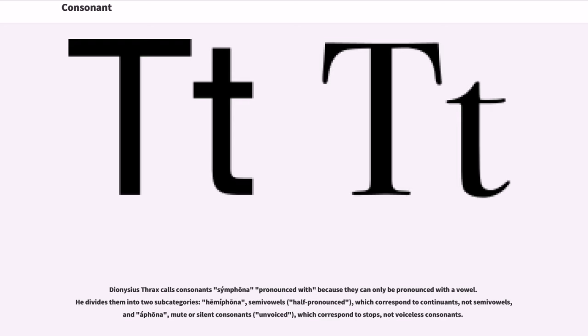Dionysius Thrax calls consonants symphona because they can only be pronounced with a vowel. He divides them into two subcategories: hemiphona (semi-vowels or half-pronounced), which correspond to continuants, and aphona (mute or silent consonants, unvoiced), which correspond to stops.